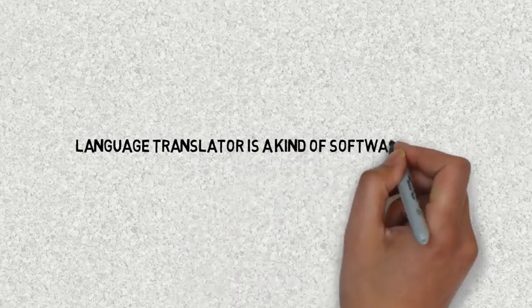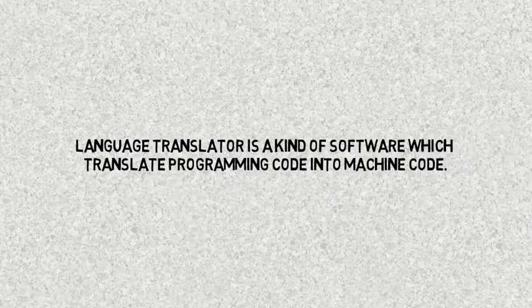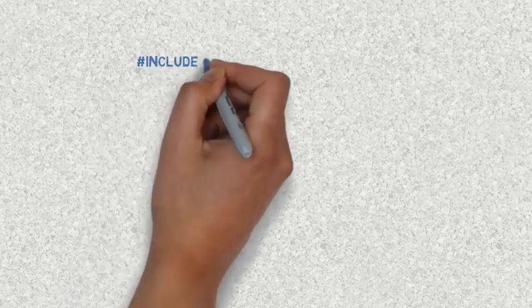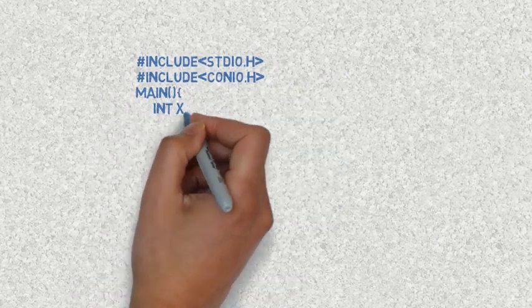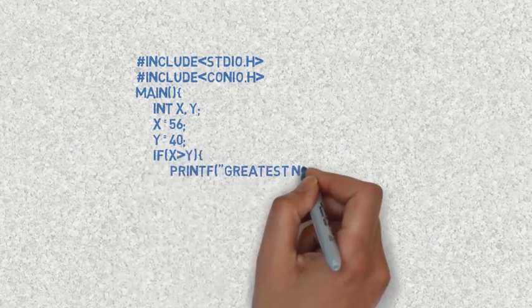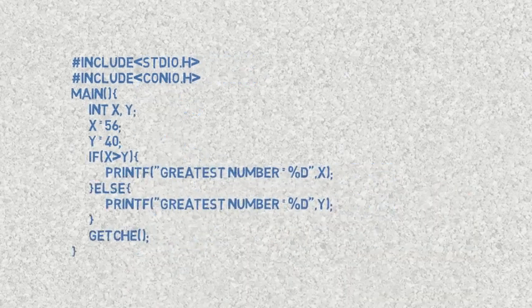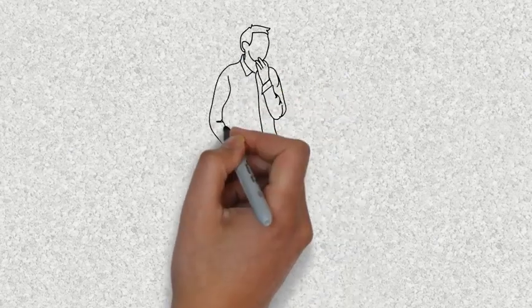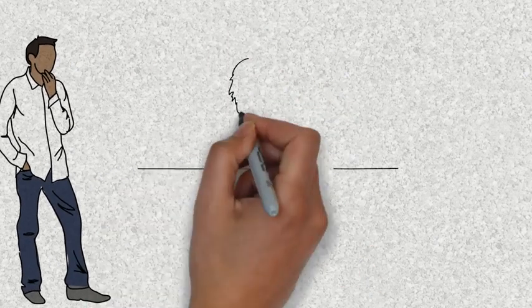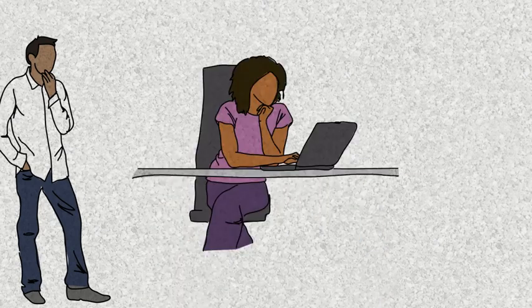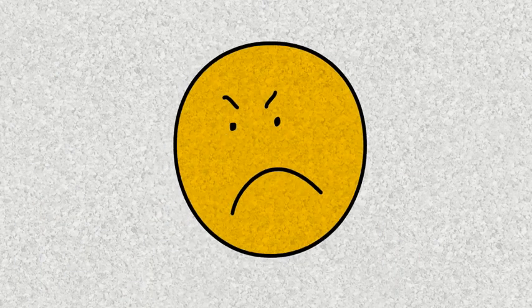Language Translator is a software which converts programming language code to machine code. In the computer, English alphabet, symbol and number make up a program. This is a high-level programming language. High-level programming language is written in English — you can use English language, alphabet, symbol or numbers.